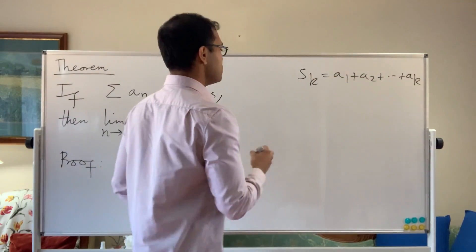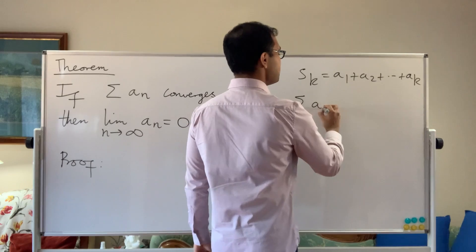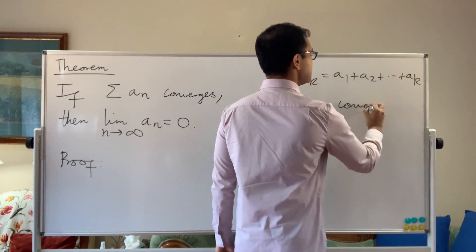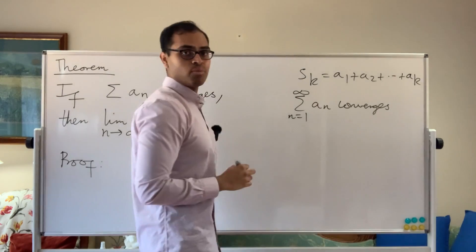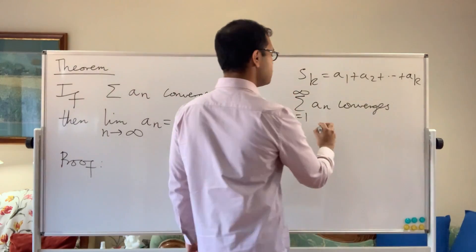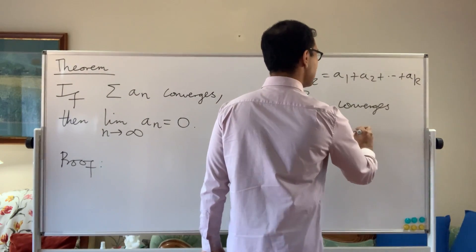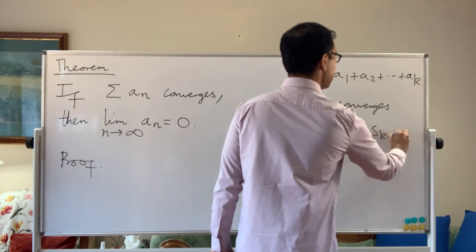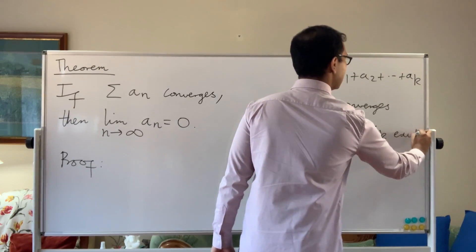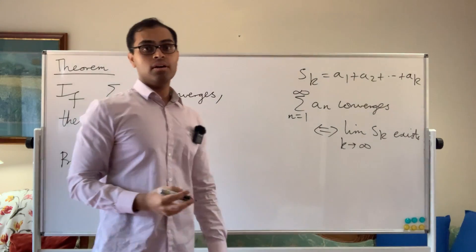And if sum a_n converges, that's the same as saying sigma a_n converges. And this is, of course, when we don't specify parameters, we're summing all of them. So it's n varies from 1 to infinity. But that happens precisely when the limit of the sequence of partial sums, limit k goes to infinity of S_k exists. Okay, so that's what it means for the sum to converge.